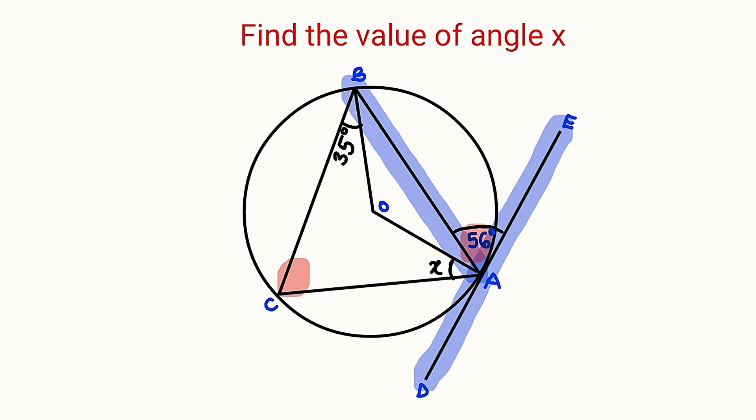And how can we define alternate segments? All right. If a chord and a tangent form an angle, that angle is exactly equal to the angle subtended by that chord.